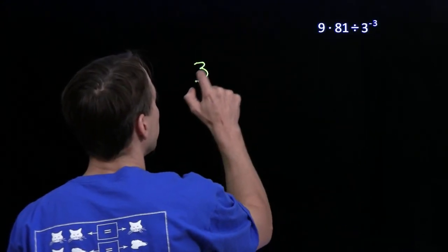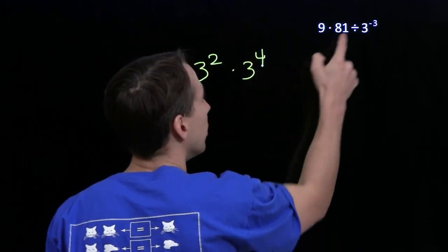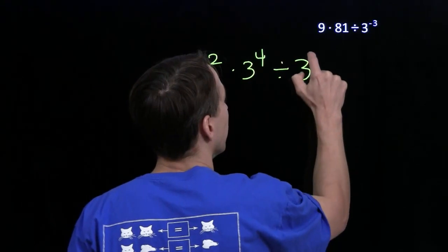The 9 is 3 squared. The 81 is 3 to the 4th. And the last number is already a power of 3.